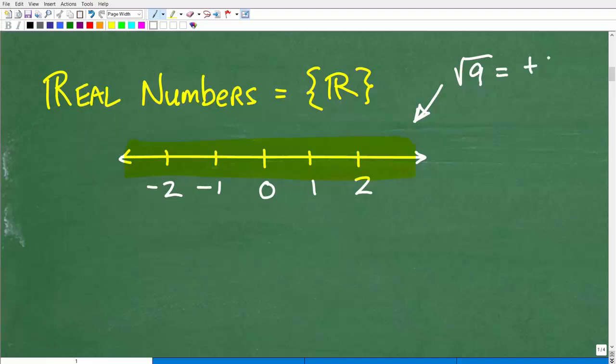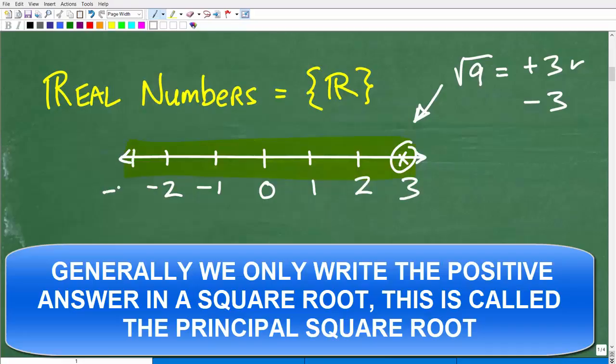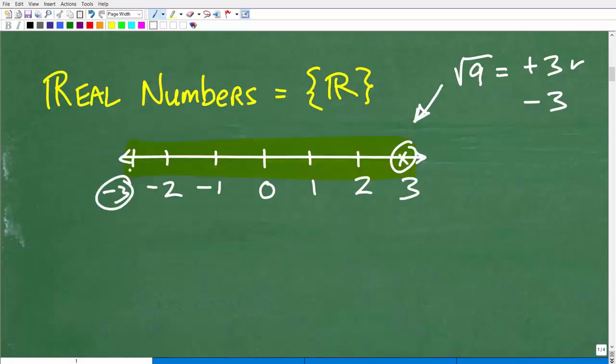All these numbers here are on what we call the real number line. This is pretty much what all of us have been familiar with up until around your study into like algebra one, algebra two. So if I asked you what the square root of nine is, the answer is both positive and negative three. I can locate the answers on the number line, the real number line.